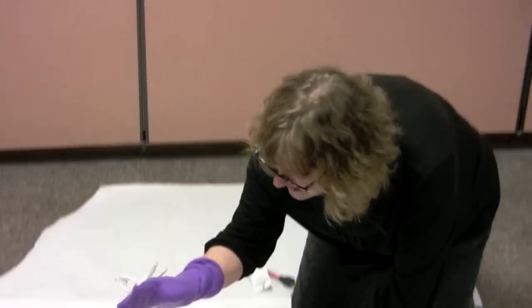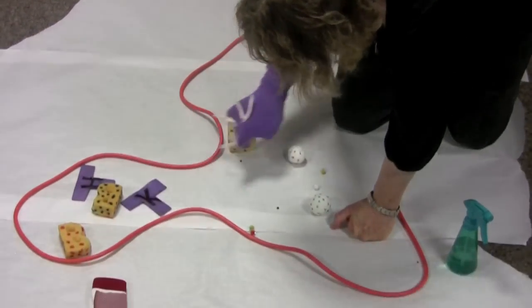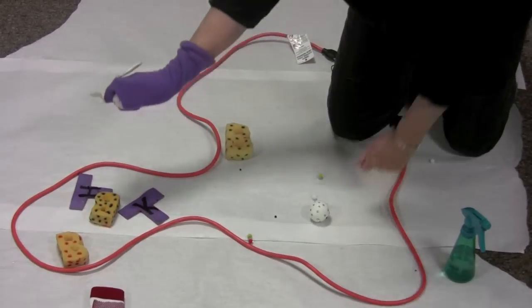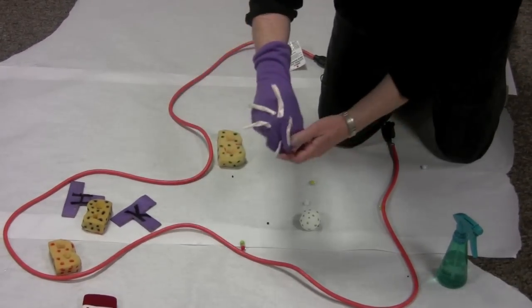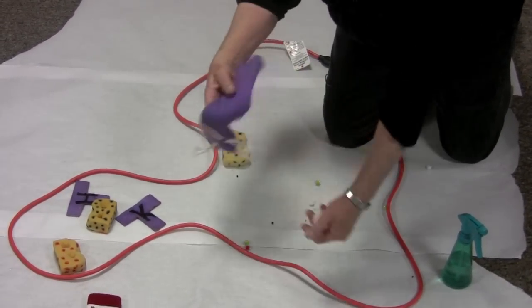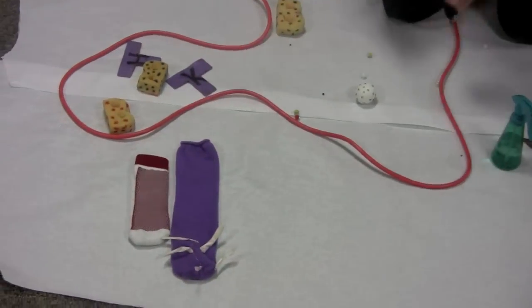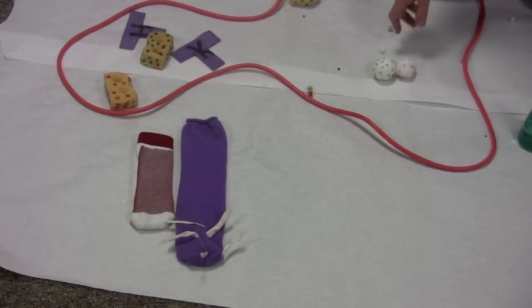It has these dendrite-like projections. And that's the one that presents to the helper T cell and activates the T cell. There we go. There's our dendritic cell, also part of our innate system, the system that we all have without any special to-do.